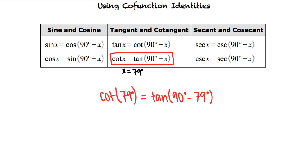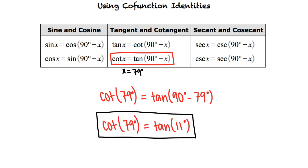Simplifying the right-hand side, we see that cotangent of 79 degrees equals tangent of 11 degrees. So to write equivalent trigonometric expressions, we can use the co-function identities to relate pairs of expressions. The co-function pairs are sine and cosine, tangent and cotangent, and secant and cosecant.